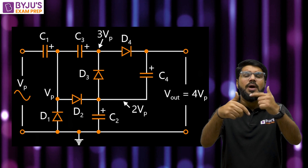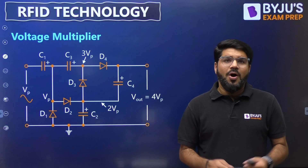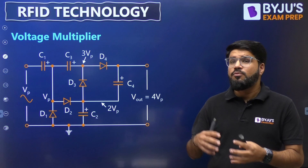The voltage multiplier takes the input from the tag's antenna and amplifies it as needed — it can double, triple, or quadruple it, even make it 16 times — so that there is sufficient power to turn on the chip. The circuit diagram shown here is a voltage quadrupler that multiplies the voltage by a factor of four. Before discussing the quadrupler, let's break it down by first understanding a voltage doubler.